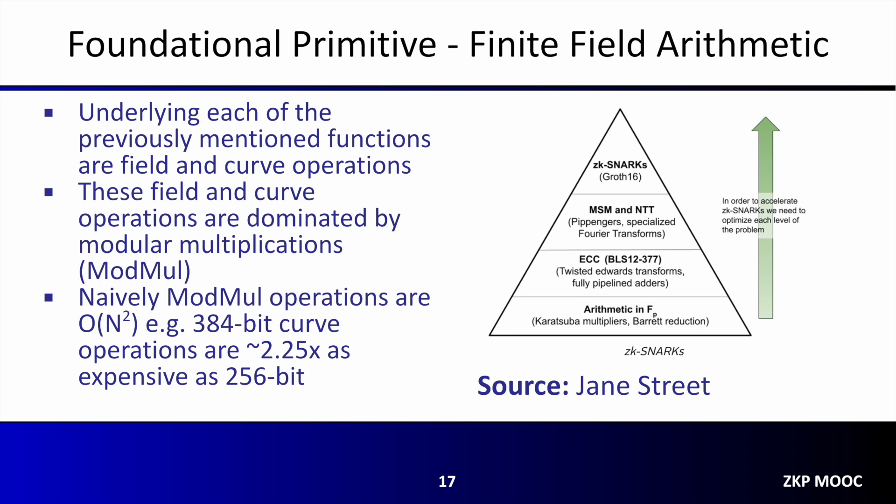While these three operations might seem wildly different, they actually share common foundational components. Underlying each of these operations — MSM, NTT, and arithmetic hashes — are field and curve operations. These operations at their core are predominantly driven by field arithmetic and, in particular, modular multiplication. So while these algorithms are structured substantially differently from one another, their underlying performance often derives from the ability of the hardware to perform modular multiplications.